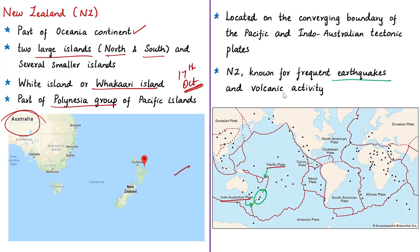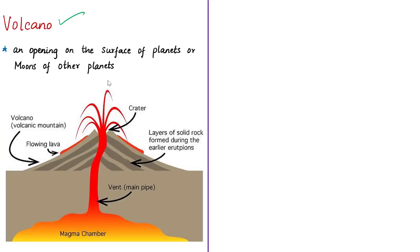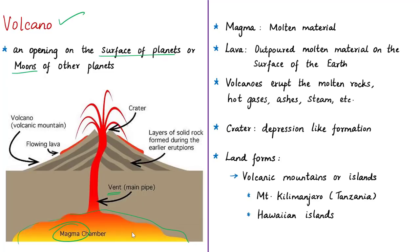A volcano is an opening on the surface of a planet or moon that allows material warmer than its surroundings to escape from its interior. When this material escapes through the vent, it causes an eruption. Inside the earth, magma is stored in the magma chamber, which is the source of molten material. This molten material, or magma, escapes through the main pipe known as the vent. Once erupted onto the surface, it is called lava.